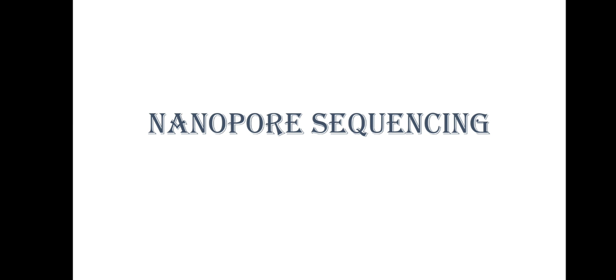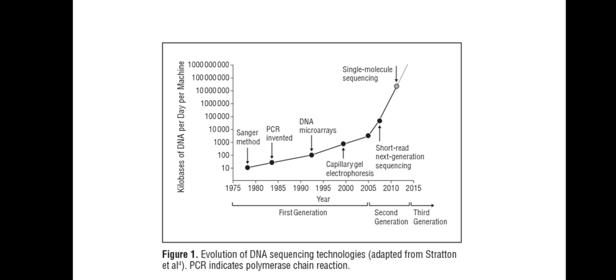Welcome everyone. In this video, I will be explaining nanopore sequencing. The first generation sequencing methods, such as Sanger method and Maxim-Gilbert method, had the drawback of being able to sequence a maximum of only 10,000 kilobases of DNA per day.